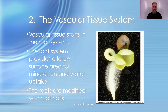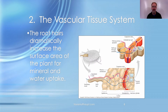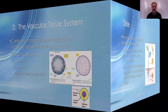The vascular system consists of xylem and phloem, which conduct sugary carbohydrate-rich fluids and water and minerals around the plant. Looking at a root, you can see the fuzzy root hairs, which are modifications that greatly increase surface area and help increase water uptake. The vascular tissue system carries out long-distance transport of materials between roots and shoots, and together xylem and phloem make up the stele.